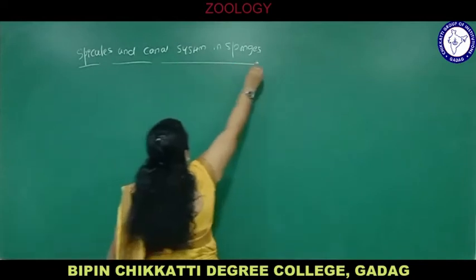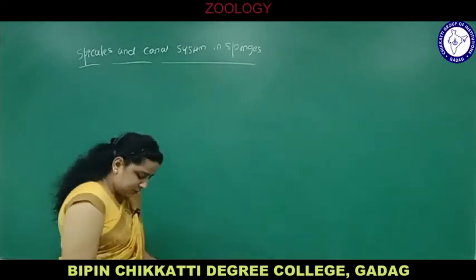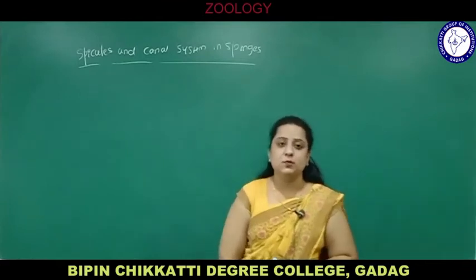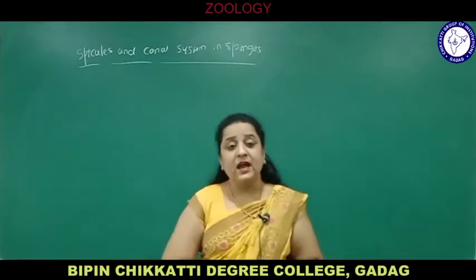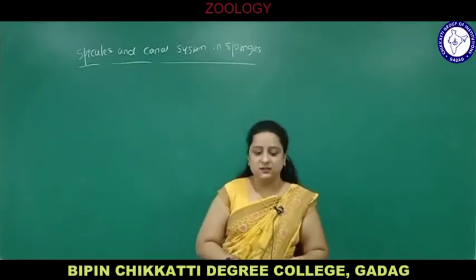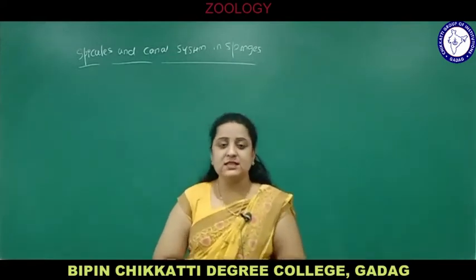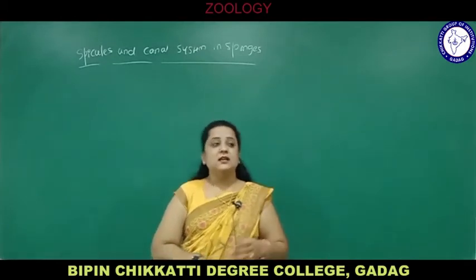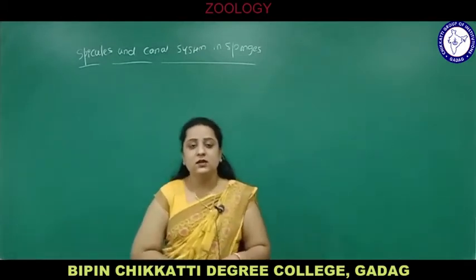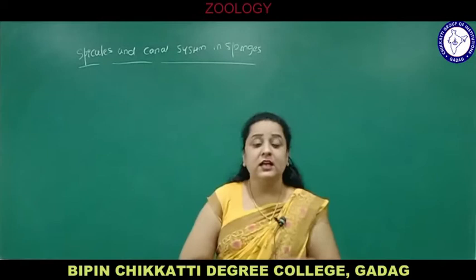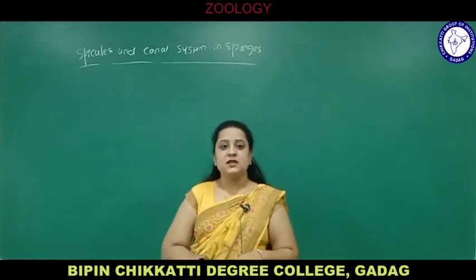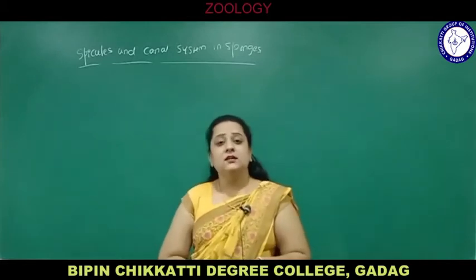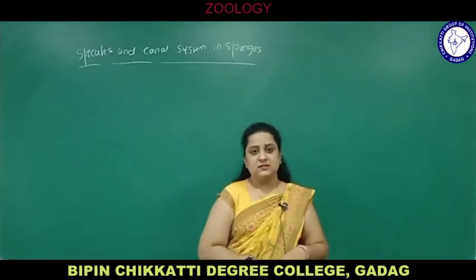Porifera are commonly known as sponges and they are pore-bearing animals. The body is covered by numerous pores called ostea, and the most important character of phylum Porifera is the water canal system, which helps in transporting food, waste substances, reproduction, and transport of sperms and eggs for fertilization. It assists in all these physiological functions.